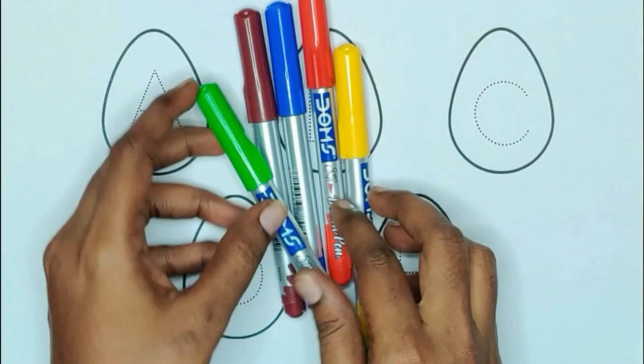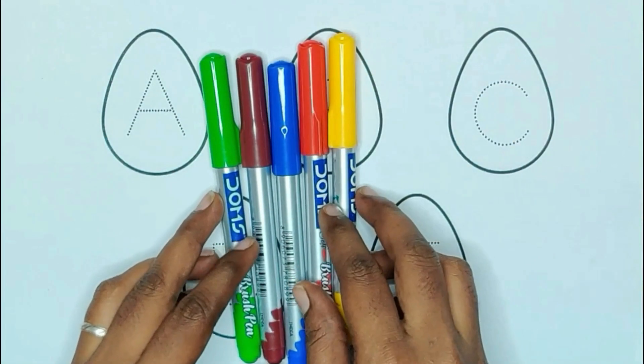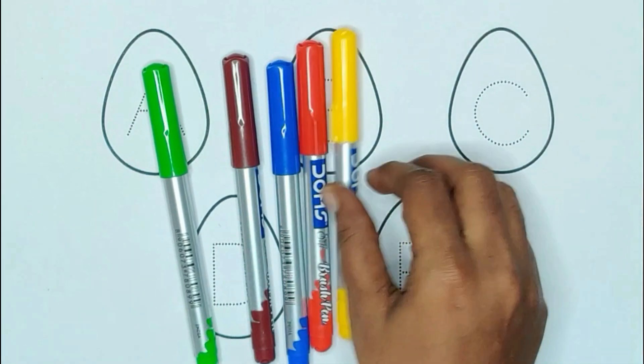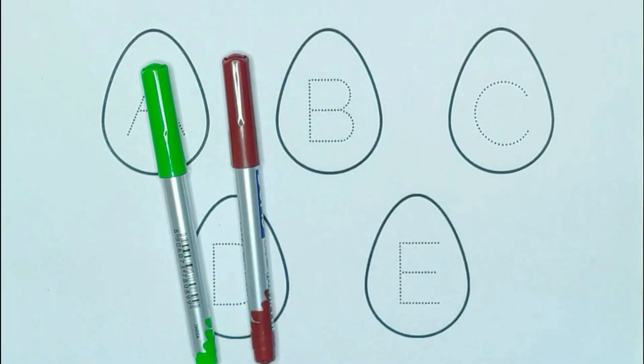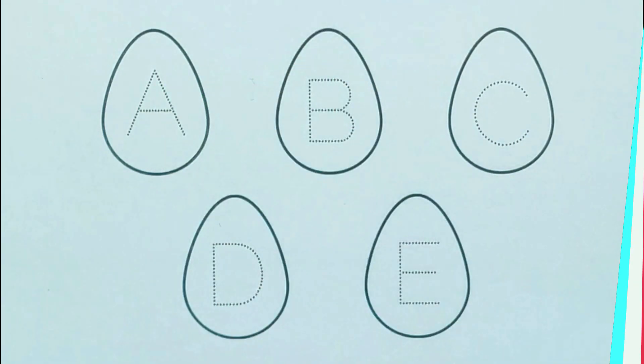Today we are learning alphabets with colors. Yellow color, red color, blue color, brown color and green color.